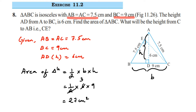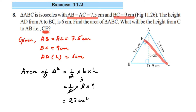We got 27 cm². Now the second part of the question: we have to find the height from C to AB, that is CE. Since we know the area of the triangle, we're going to use the area with base AB, where CE is perpendicular to AB, to find the height CE.